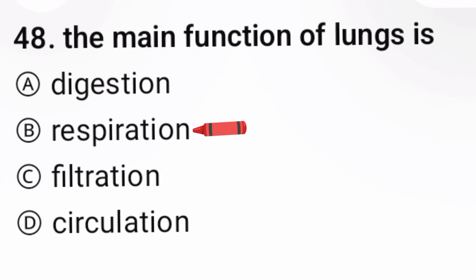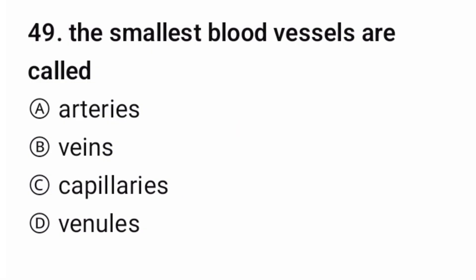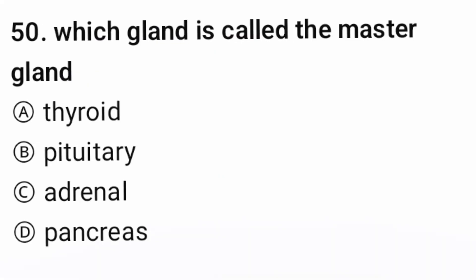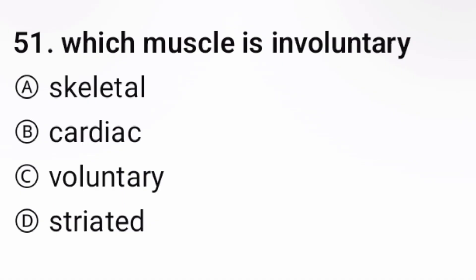Question 48: The main function of lungs is — correct option is B, respiration. Question 49: The smallest blood vessels are called — the correct option is C, capillaries. Question 50: Which gland is called the master gland? The correct option is B.